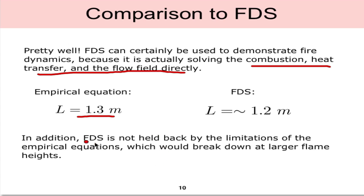Additionally, FDS is not held back or limited like the empirical equation. The empirical equation would break down at larger flame heights outside of that experimental data set, whereas in FDS we could always make a larger heat release rate or larger burning area. Because it's solving for the combustion and physics directly, we'd be able to use it for a wider range of problems.